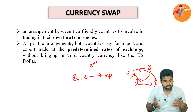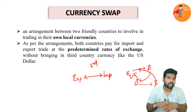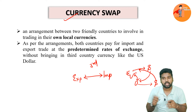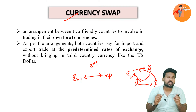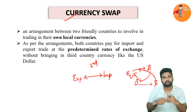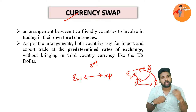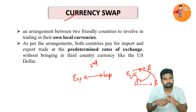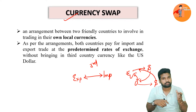To avoid such problems, countries with bilateral relations enter into an agreement known as a currency swap. Here, it is an arrangement between two friendly countries where they conduct trade in local currency. For example, if India is buying something from Bangladesh, rather than paying in dollars, we pay in Indian rupees or Bangladeshi taka, and vice versa. Thereby we are exchanging currencies and avoiding the third currency entirely.